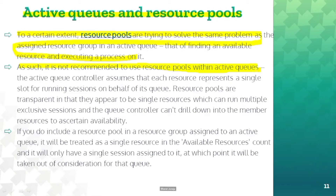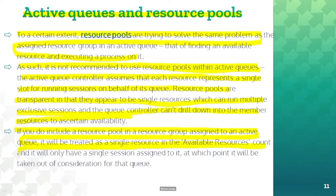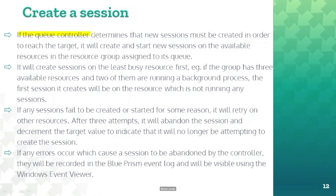It is recommended to use resource pools within active queues carefully. The active queue controller assumes that each resource represents a single slot for running sessions on behalf of its queue. Resource pools are transparent in that they appear to be a single resource which can run multiple exclusive sessions, and the queue controller can't drill down into the member resource to ascertain availability. So if you include a resource pool in a resource group assigned to an active queue, it will treat it as a single resource in the available resources count and will only have a single session assigned to it.